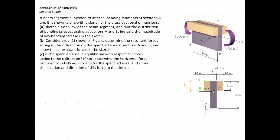This beam has a length of 16 inches and is subjected to two moments. On the right side, the moment is 4,700 pound-feet, and on the left side it's 3,300 pound-feet. We want to determine the stress at points A and B on the flange of section number one. For determining bending stress, we need the moment of inertia and the location of the centroid.